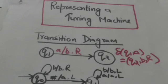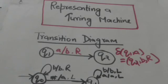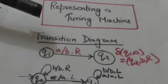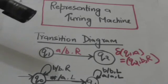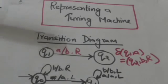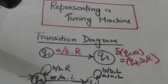Hello friends, welcome back. In this tutorial we will study how we can represent a Turing machine. A Turing machine can be represented graphically by a graph. The graph which represents the Turing machine is called the transition diagram of the Turing machine.